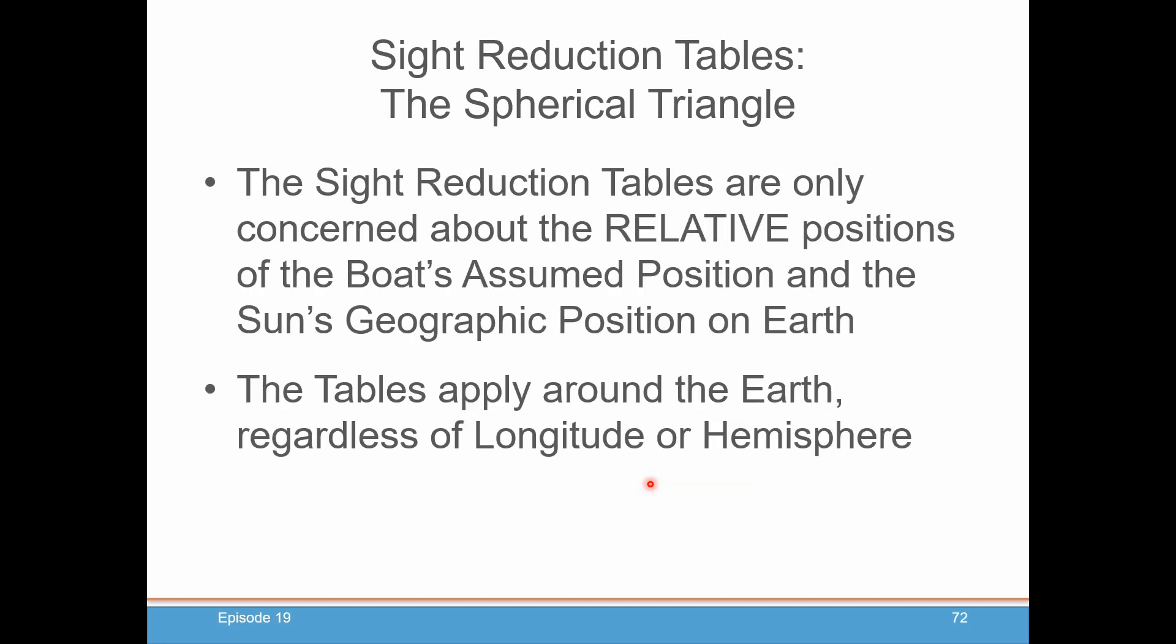Another thing to know about the site reduction tables in the spherical triangle is that the tables work no matter where you are on the Earth, because they don't depend on your longitude, only the LHA, which is really just a relative position from where your boat is to the geographic position of the object you're observing. In our case it's going to be the sun. So you could be at 150 degrees and the sun's at 180 degrees, that's a 30-degree LHA. The same tables work if you're at 90 degrees and the GP's at 120 degrees. Again, it's that same 30-degree LHA. That's all that matters.